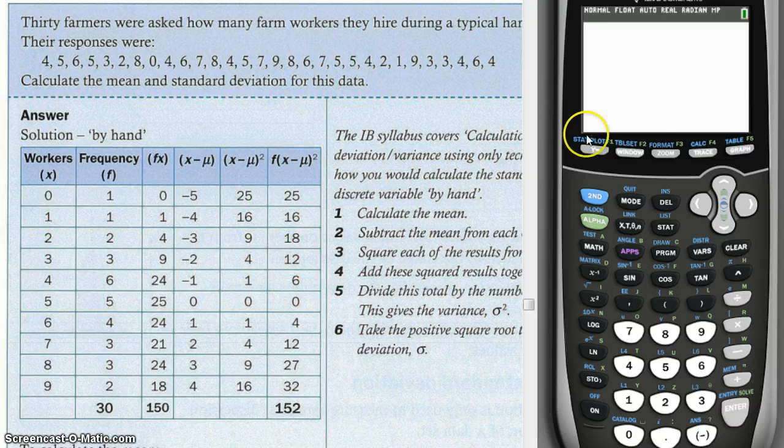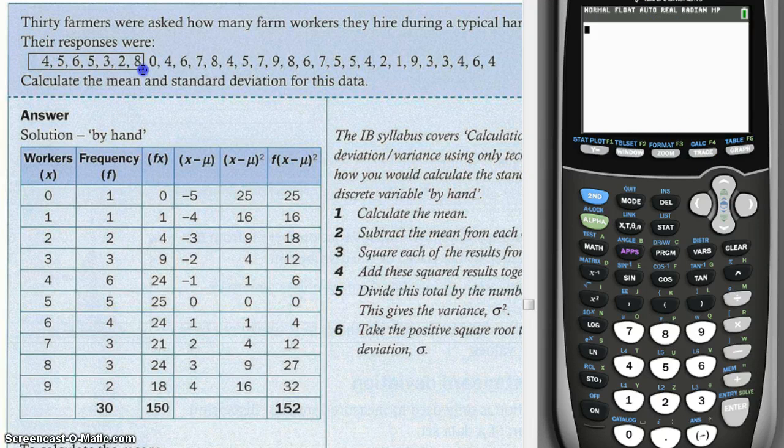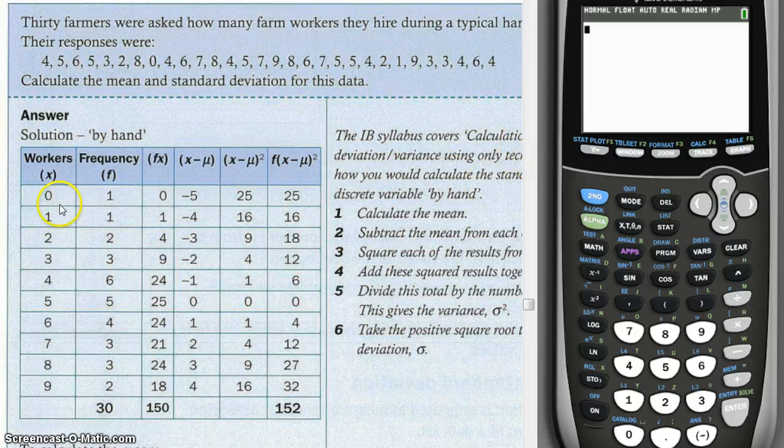Here I have my TI-84. I'm not going to put 4, 5, 6, 5, 3, 2, 0, 4 - I'm not going to put each and every one of them in the calculator. Instead, what I'm going to do is put this column: 0, 1, 2, 3, 4, 5, all the way up to 9 - that is the category.